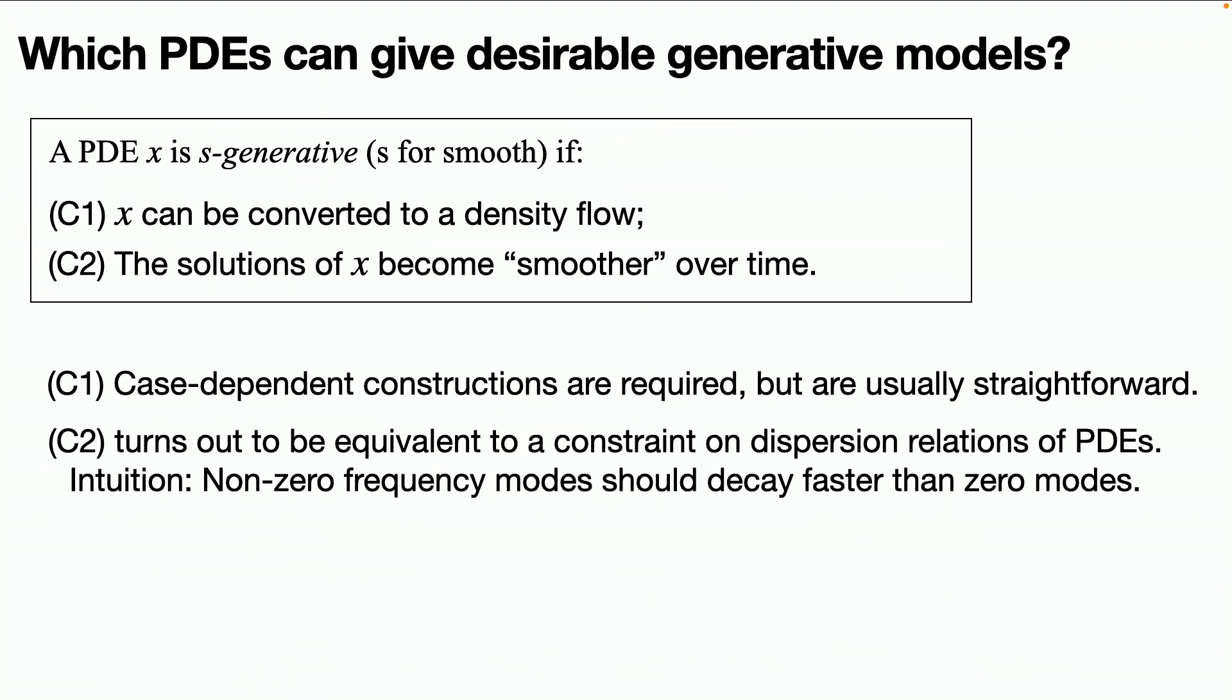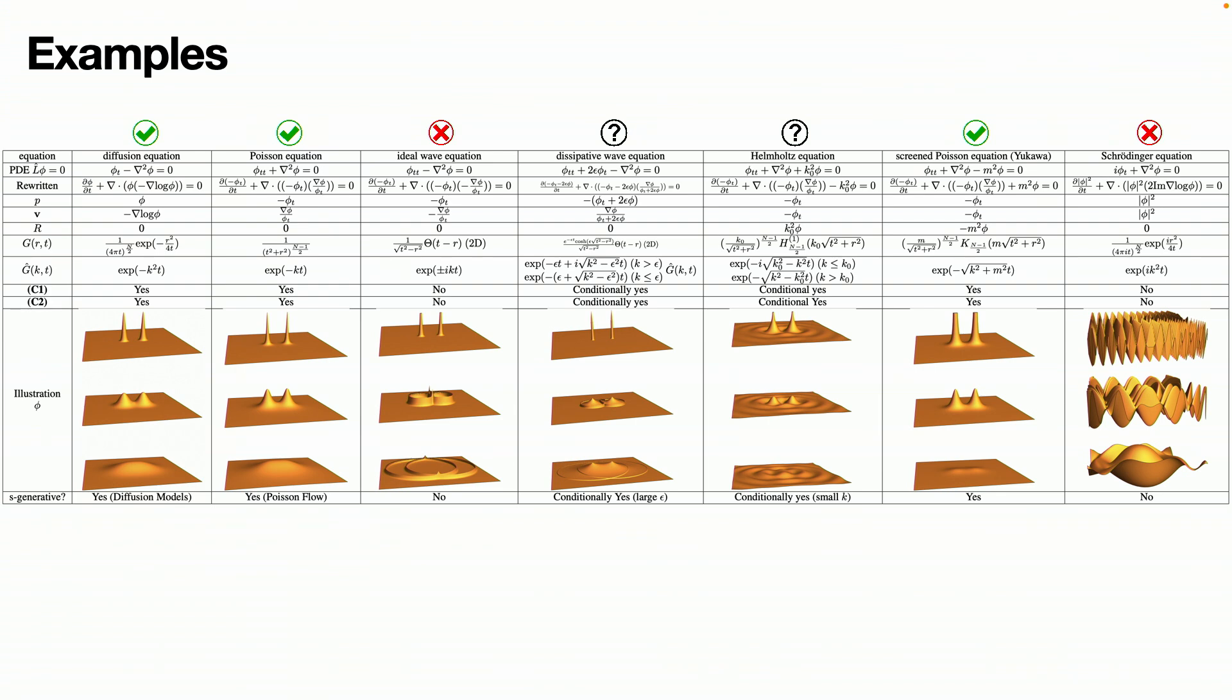So the condition for physical equations to be desirable generative models are two parts. The first condition is that it can be rewritten as a density flow. I have shown you that on a case-by-case basis, this is usually straightforward, so let's not worry about that. The second part is the more important one here, is that it should become smoother over time. So what kind of equations have this smoothing condition? Diffusion equation, Poisson equation, of course, have this smoothing condition, and interestingly, this so-called screened Poisson equation, the Yukawa potential, known in weak interaction theory in physics also has this smoothing condition.